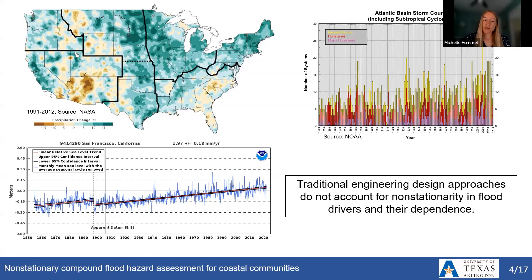In addition, the dependence between rainfall and surge may also change over time as common drivers like tropical cyclones evolve in a warmer climate, potentially bringing more intense rainfall accompanied by high wind-driven surge. We're seeing changes both in individual flood drivers and in the potential dependence between wind-driven surge and rainfall. Given these observed and predicted future changes, we need to better incorporate non-stationarity into our flood risk assessments and into the design of flood control infrastructure.